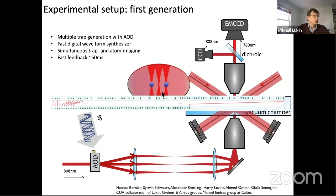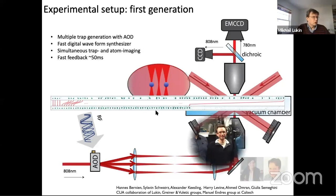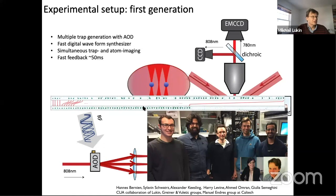We take a picture, activate a feedback loop, and rearrange atoms. For example, we first take a picture of about 100 tweezers filled with about 60 percent probability, then move each atom to form a much more regular array.